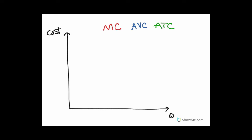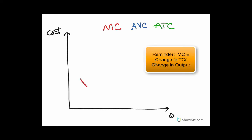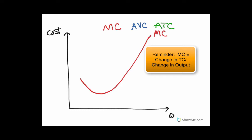I usually start with marginal cost. What it does is it starts, then it goes down for a little while, and then it pulls up. That's really all there is in marginal cost as far as what the graph looks like. The bigger part of this graph is where the marginal cost interacts with the average variable cost and average total cost.